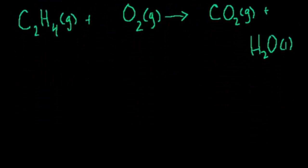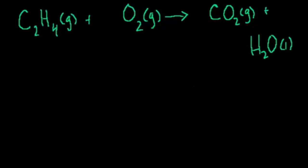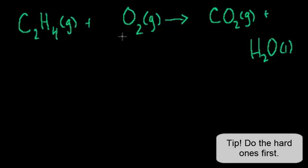Here I have methane — that (g) in parentheses just means it's a gas. So I have methane gas plus oxygen gas yields carbon dioxide gas plus liquid water. The general strategy is: do the complicated molecules first, and then at the end you can worry about the single-atom molecules, because those are very easy to play with.